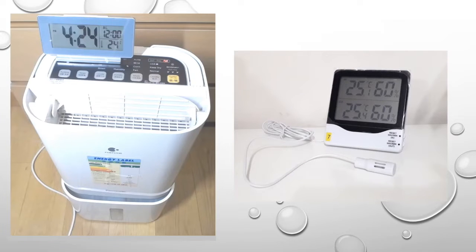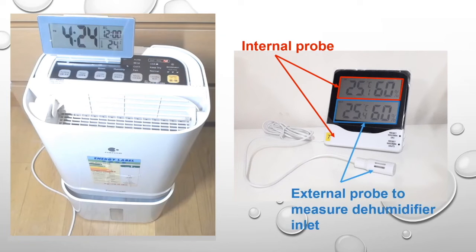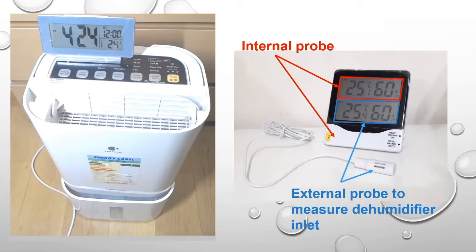This sensor has two probes in it, an internal probe which is located inside the casing, and an external probe outside so that we can measure the temperature and relative humidity at two different locations.